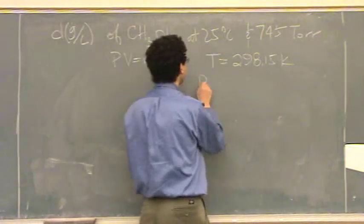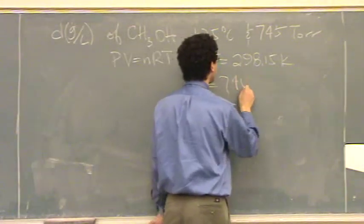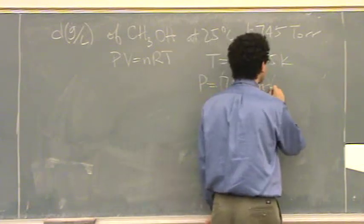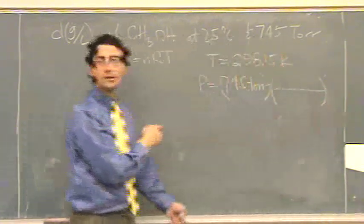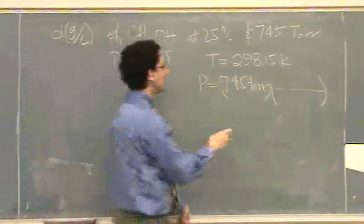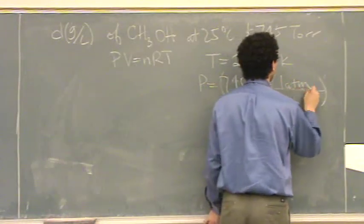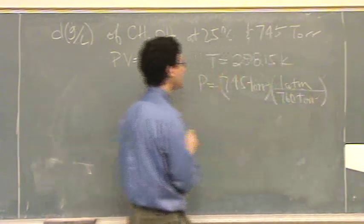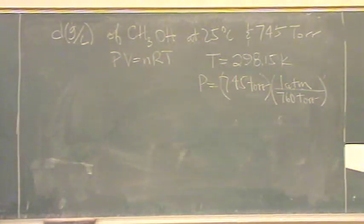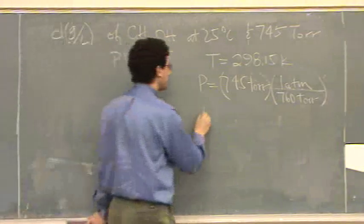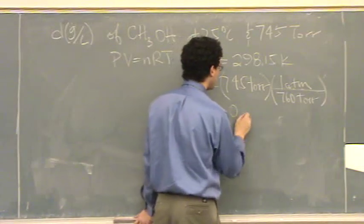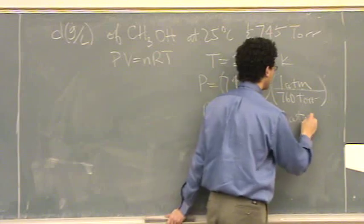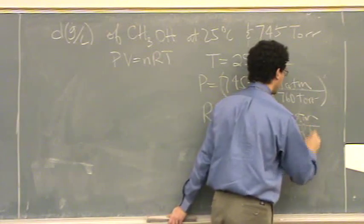The pressure is 745 torr. I've got to convert that to what units? Atm. Yeah, atm. So one atm is 760 torr, and that will be given on the exam. Now if you know it, I guess you're that much faster. R is going to be 0.08206 liters atmosphere per mole Kelvin.